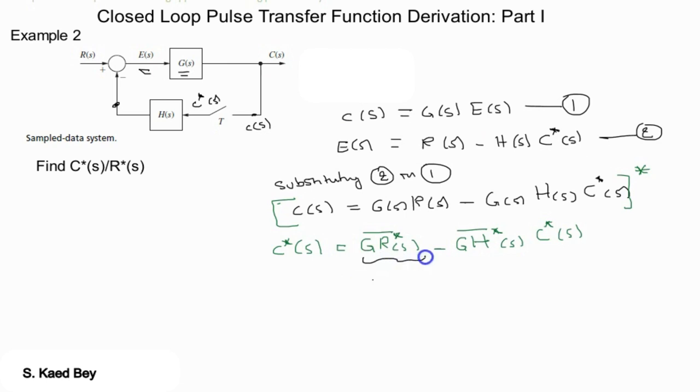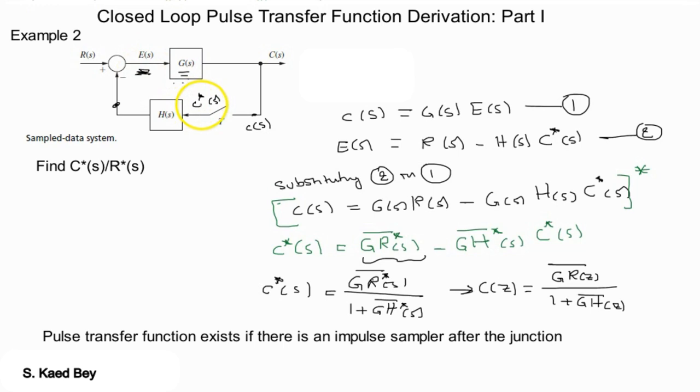If you notice that the desired input or the forcing function R is now lost as a factor. C star of s can be expressed as shown. It's evident that no transfer function can be derived for this closed-loop system.